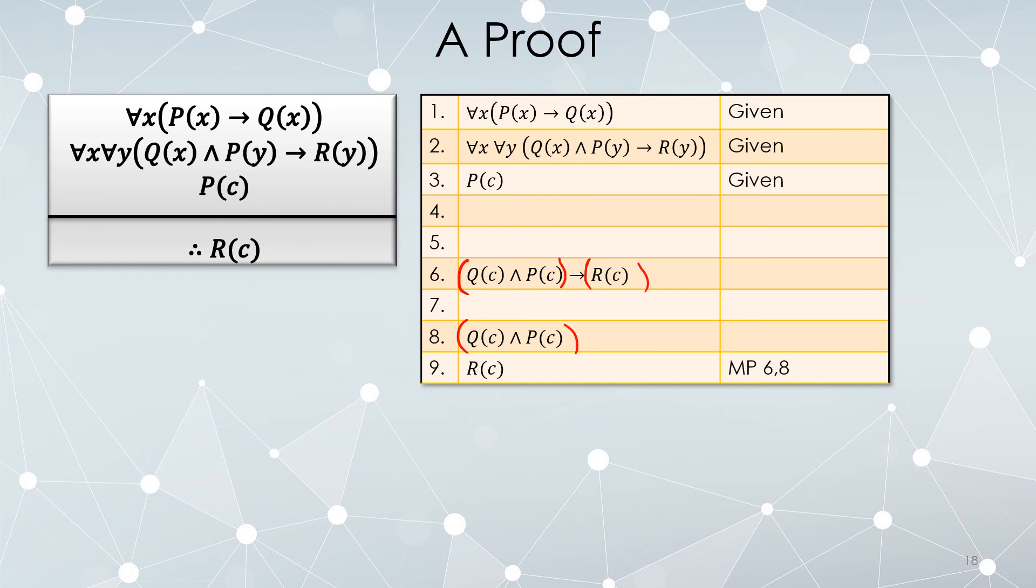The rules of inference we already know are still out there. All right, how are we going to get to line 6 and 8? Let's look at this proposed line 4. P(c) implies Q(c), universal instantiation on line 1. Sure.